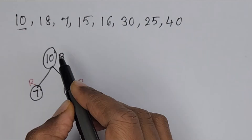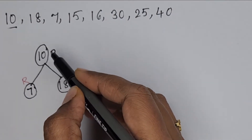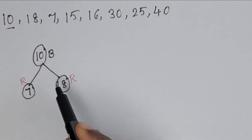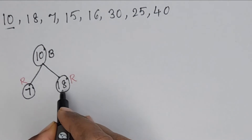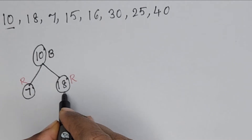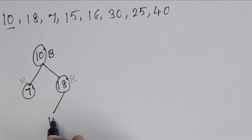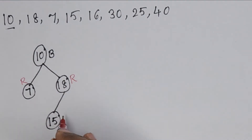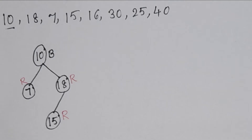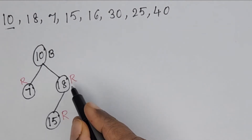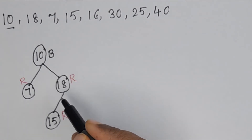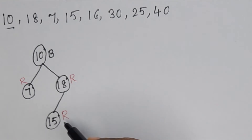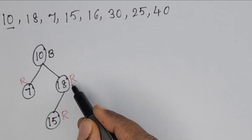Next element is 15. Since 15 is greater than 10 and less than 18, we insert 15 on the left of 18, colored red. Now the parent of 15 is red, creating a red-red conflict. Parent is red and child cannot be red.